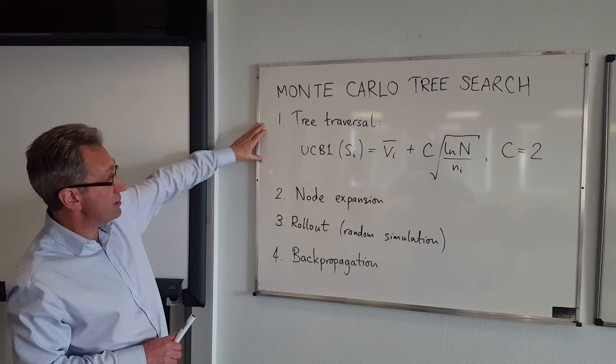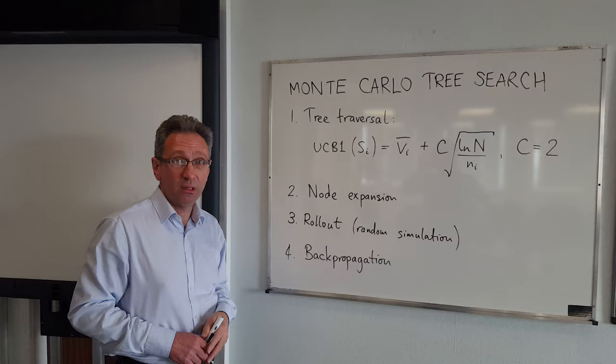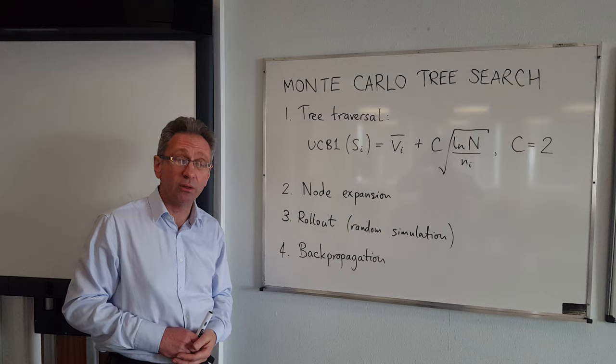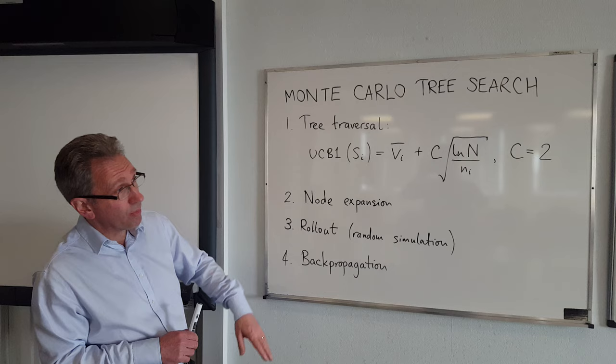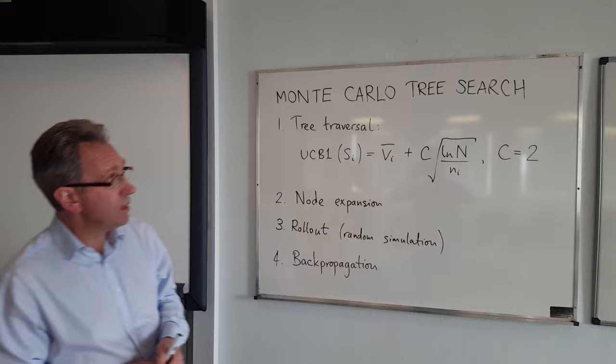Monte Carlo Tree Search works in four phases. There's a tree traversal phase using the UCB1 formula. Then there's a node expansion phase where you add extra nodes into the tree. This is followed by a rollout phase, where you do a random simulation of the game or problem you're solving in order to find a value. And then finally there's a back propagation phase, which is where you take the value found from the rollout and put it in appropriate places in the tree all the way up to the top node.